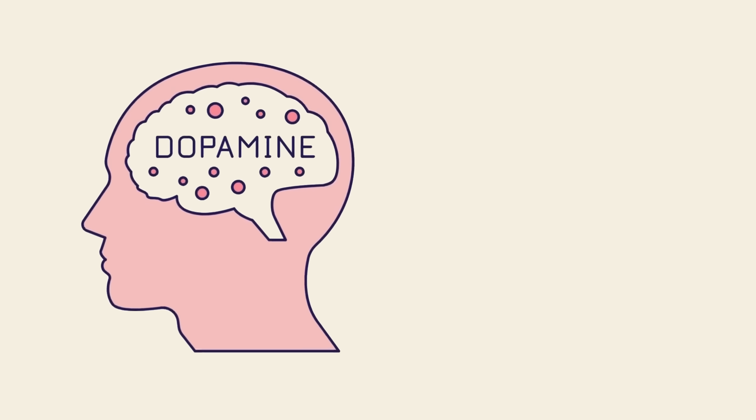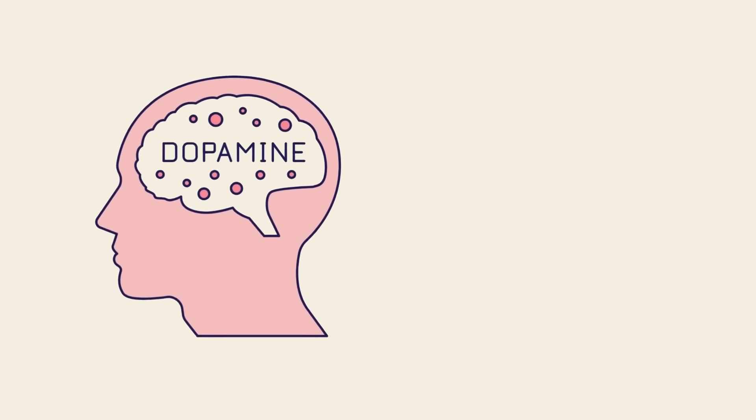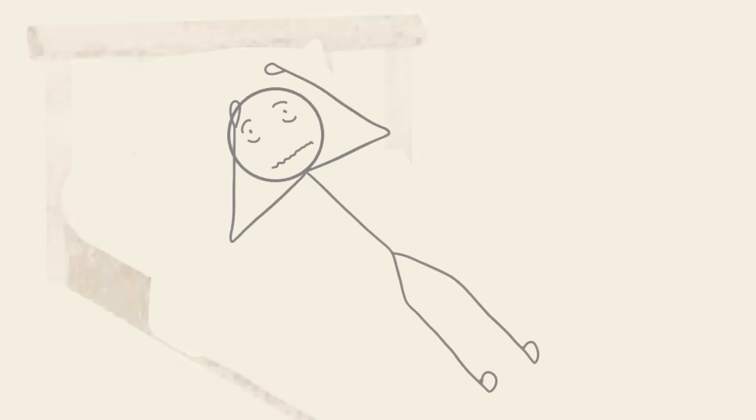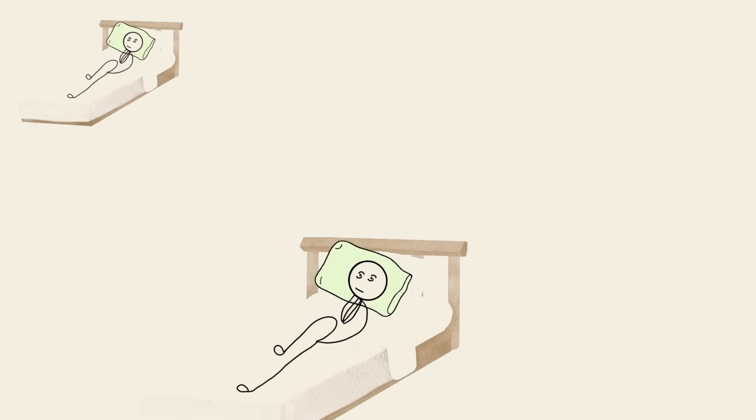The glitch lies somewhere deep in the dopamine pathways of the brain, but the result is brutally simple. Sleep is always just out of reach. Sleep, for something that's supposed to be effortless, can go wrong in a thousand ways.